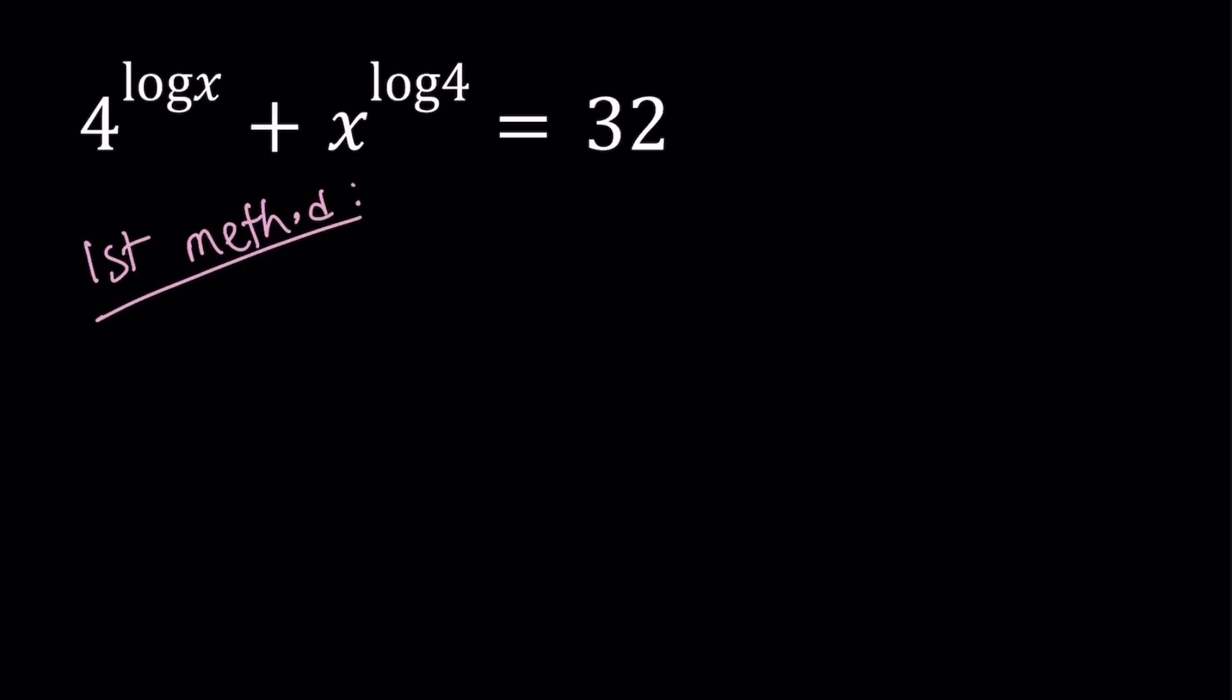Caution. The first method is going to be a little bit painful, but no pain, no gain. Alright, so here's what we're going to do. We're going to set 4 to the power log x equal to a. From here, we can basically log both sides, base 4. Let's do it.